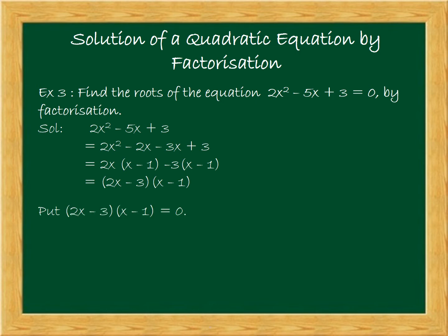To find the roots or solutions, we will put the factorization factor or bracket equal to 0. So (2x - 3)(x - 1) = 0. Then we can put each bracket equal to 0. So either 2x - 3 = 0 or x - 1 = 0.